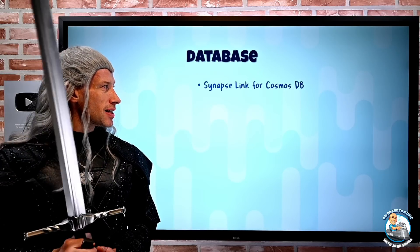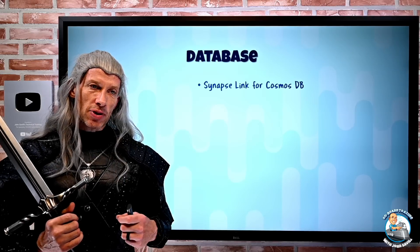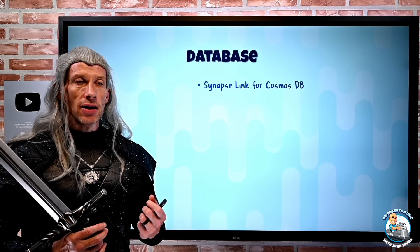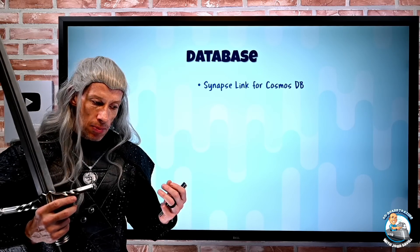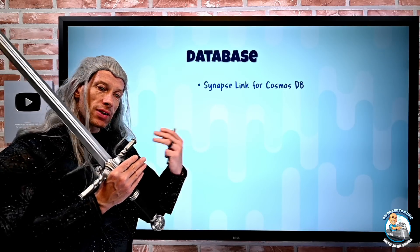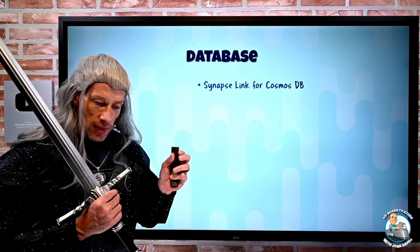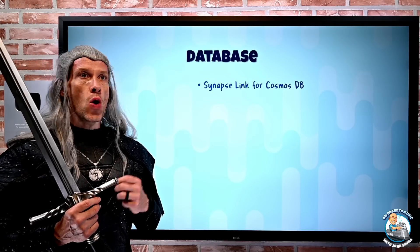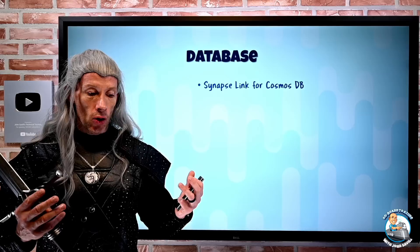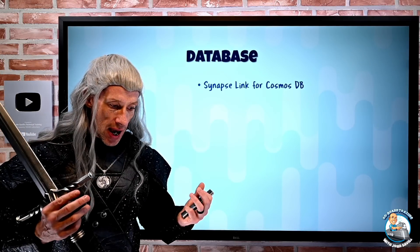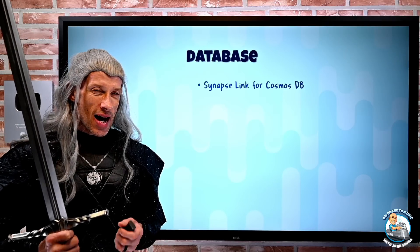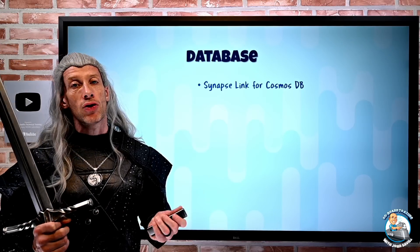On the database side, Synapse Link for Cosmos DB enables Synapse to perform transactional and analytical processing directly against Cosmos DB. Cosmos DB has its regular row-optimized transactional tables, but in near real time it puts the data into a column-store-optimized analytical store. With this, there's no extract transform load for Synapse — it will just work directly against that Cosmos DB analytical store, reducing the amount of work and overhead. I can use the nearest regional copy of that analytical store. This applies to the NoSQL and MongoDB APIs and is in preview for the Gremlin API.